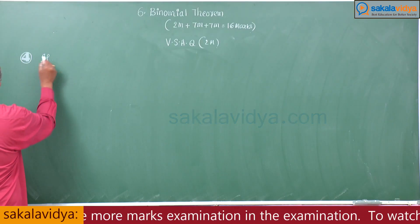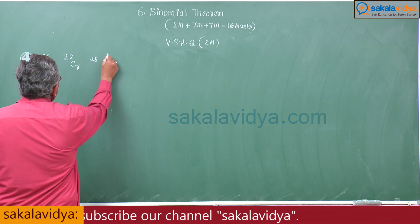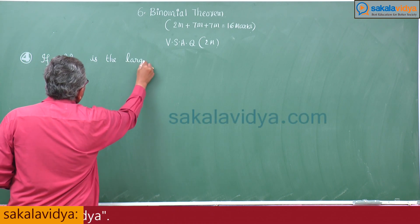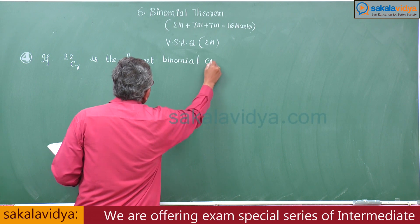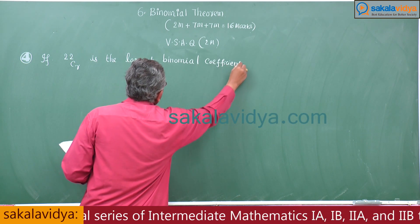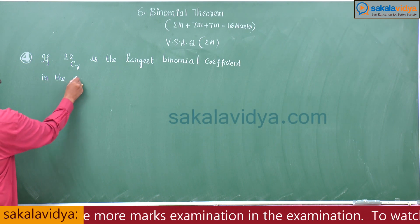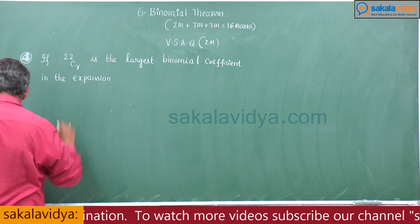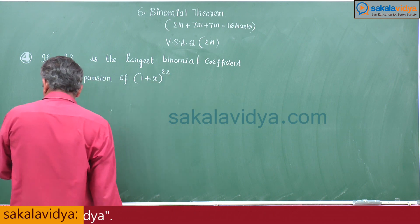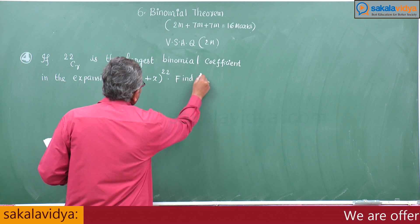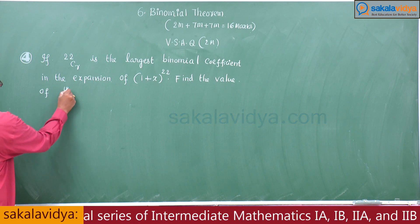If 22Cr is the largest binomial coefficient in the expansion of (1+x)^22, find the value of 13Cr.